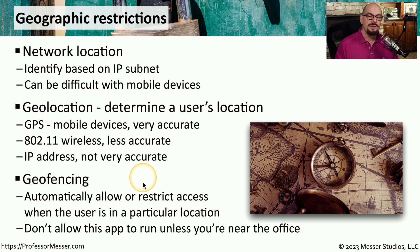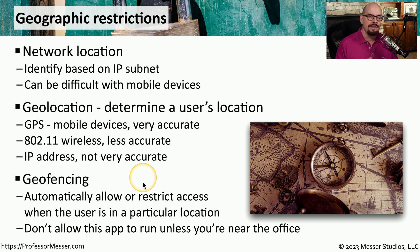For example, there may be certain types of data that should only be accessed if someone is inside one of the corporate facilities. And if they're outside the facility, they should have no access to that data. We can make the determination on whether somebody is located inside of a building based around the network location or the geolocation, and then we can associate geofencing policies to that location.